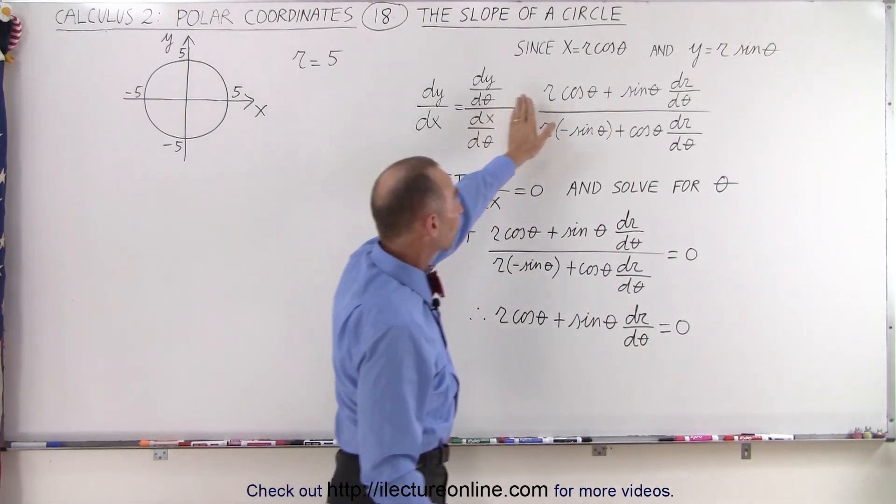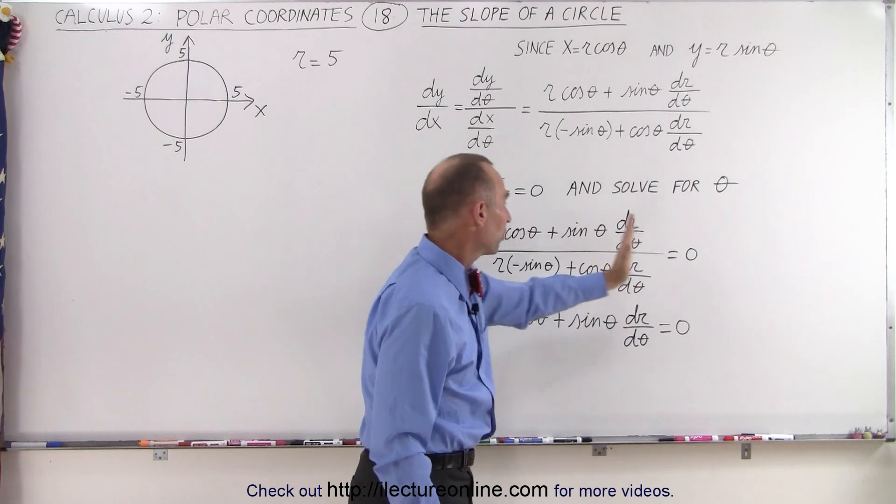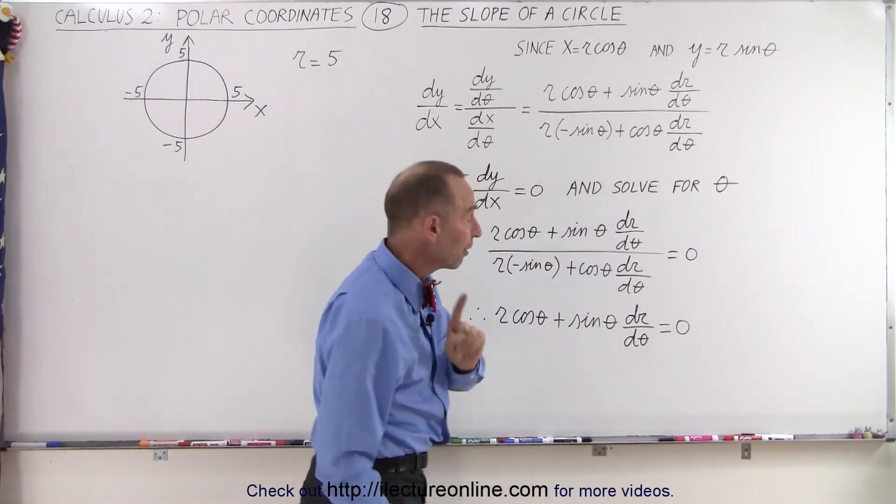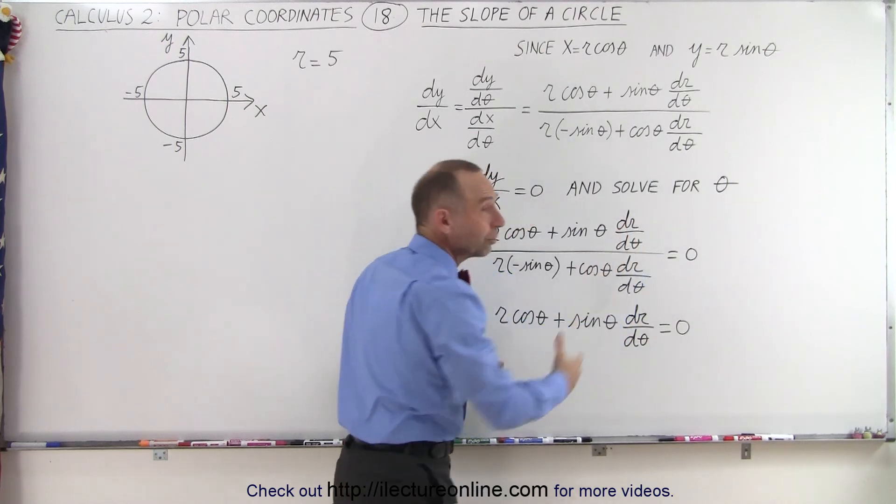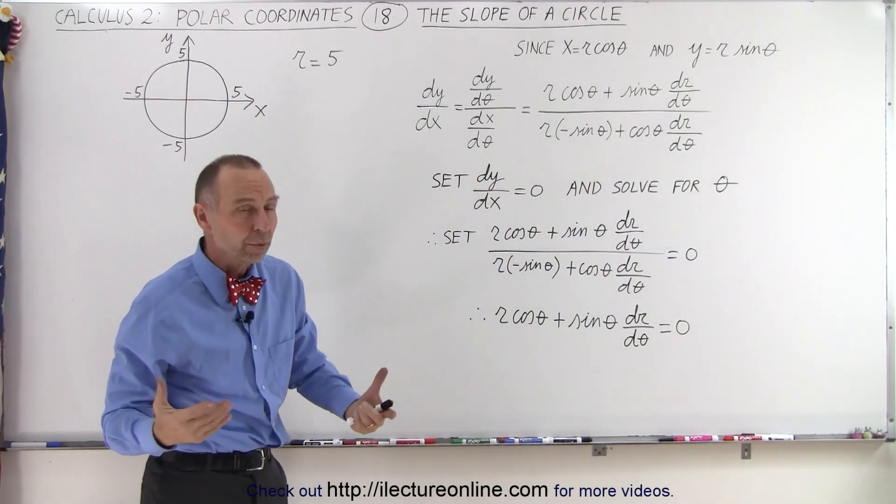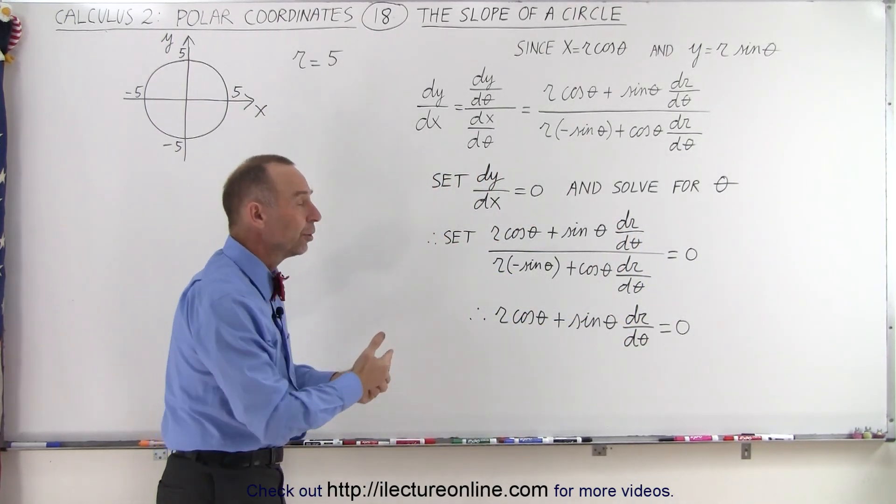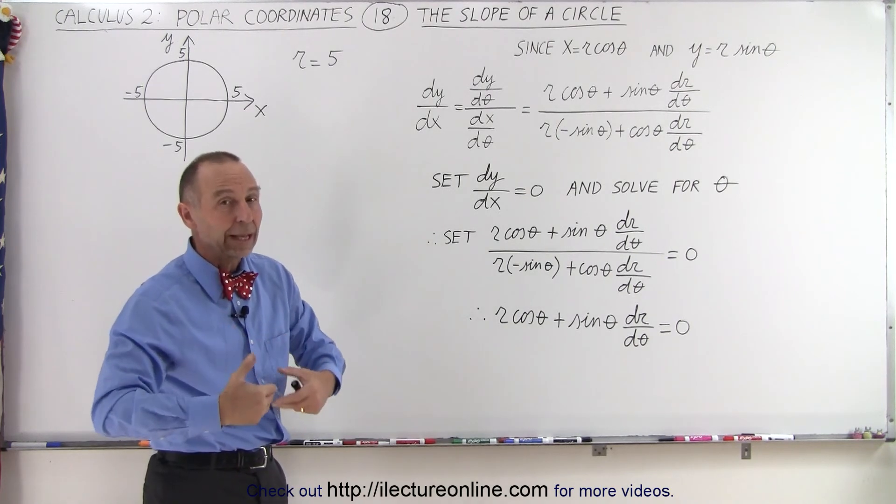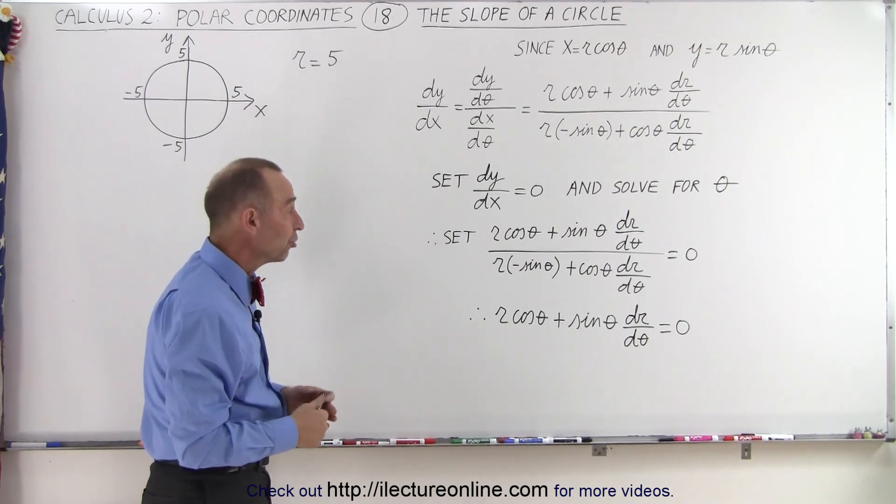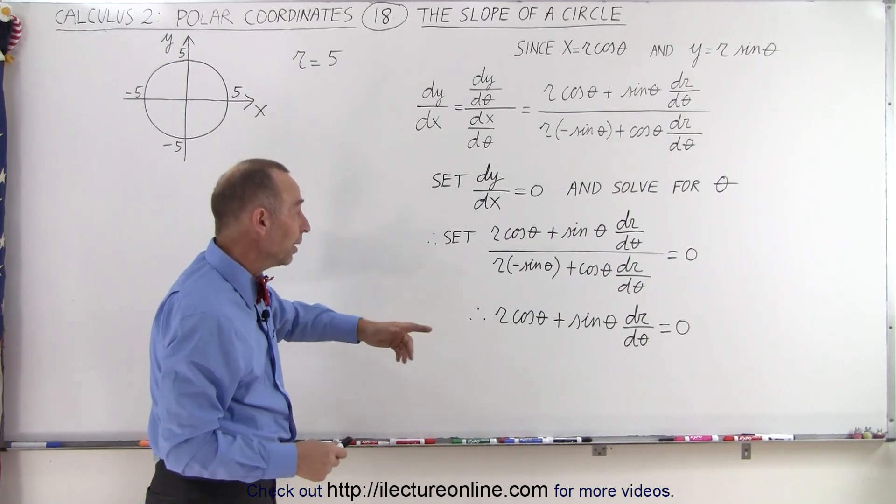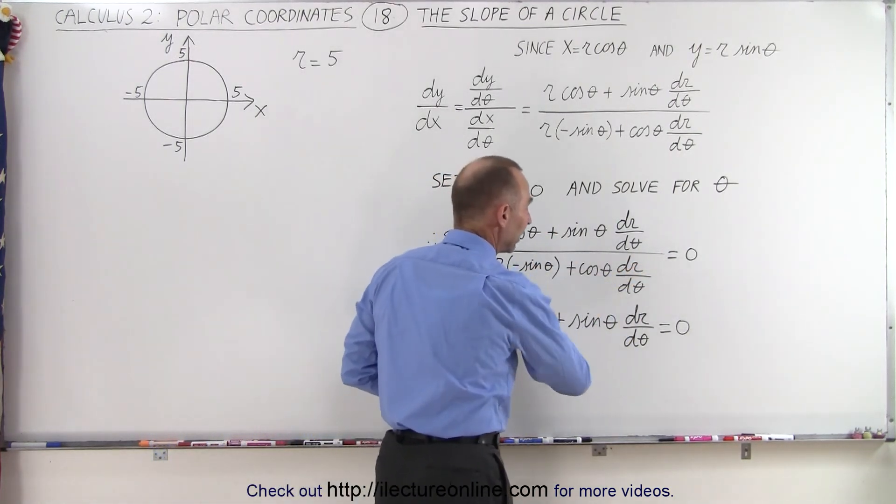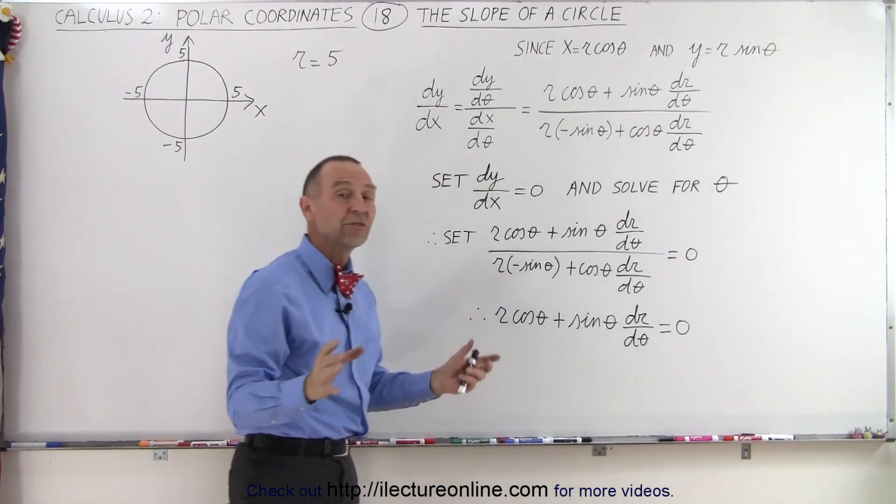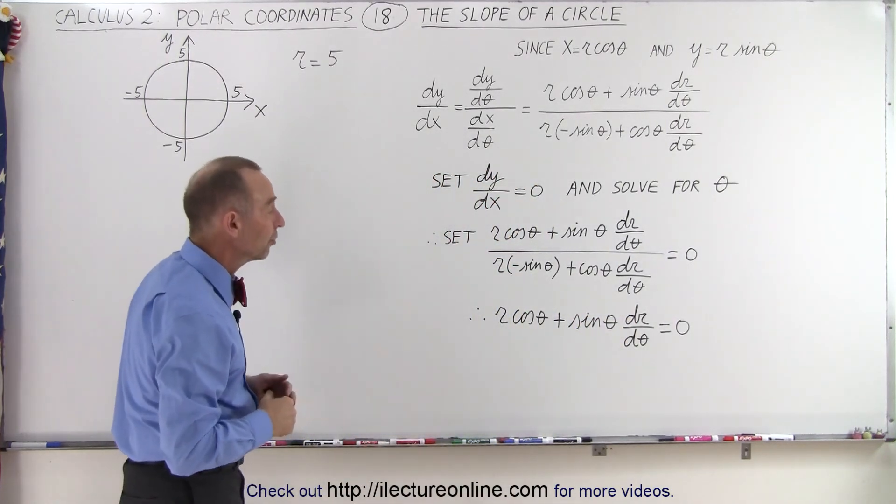So in this case, we take this expression here and set that expression equal to 0. Notice it's very important to write 'set this equal to 0,' because it isn't equal to 0, it's equal to the slope. So when you set it equal to 0, you set the slope equal to 0, and then you solve for theta. Then we realize that if a fraction is equal to 0, that means that only the numerator needs to be 0 for the fraction to be equal to 0.